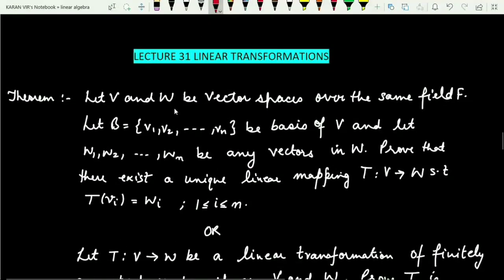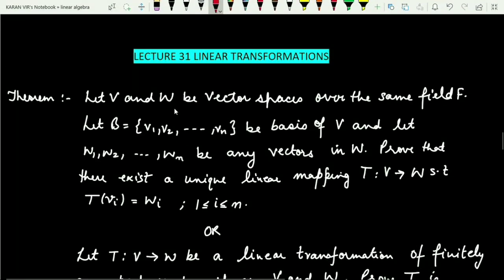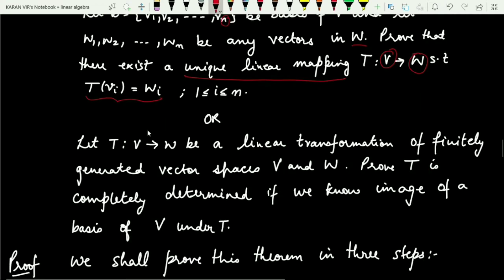The theorem is: Let V and W be vector spaces over the same field. Let the basis of V be {v1, v2, ..., vn}, and let w1, w2, ..., wn be any vectors in W. Then what we need to prove is that there exists a unique linear transformation from V to W such that T of vi maps to wi.